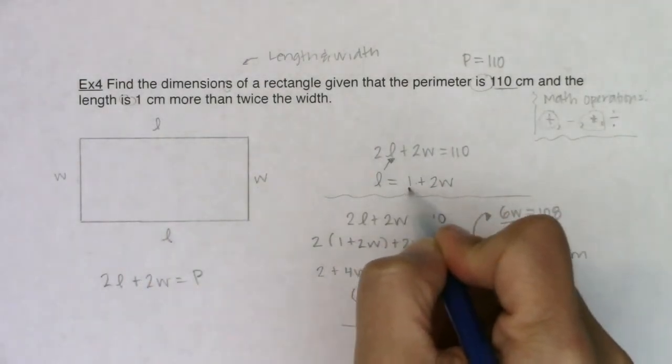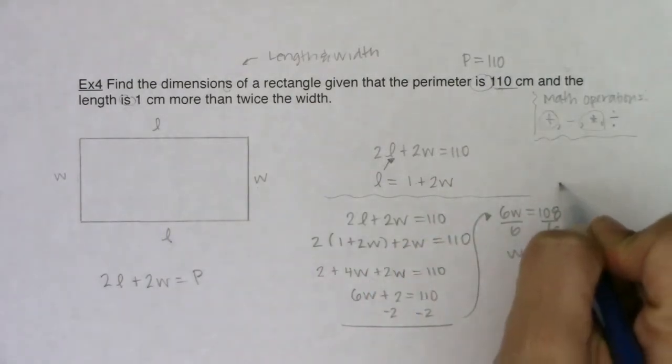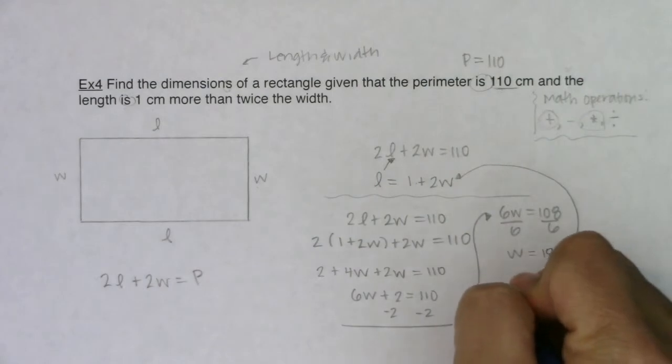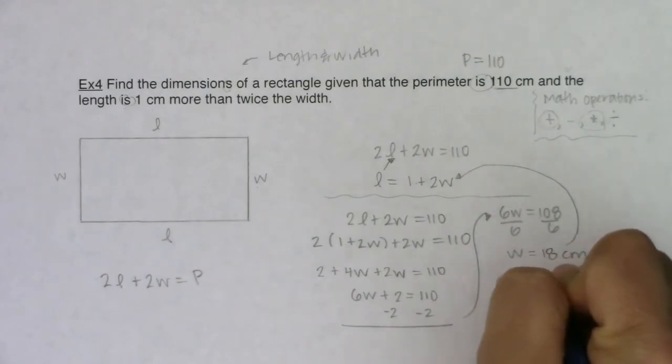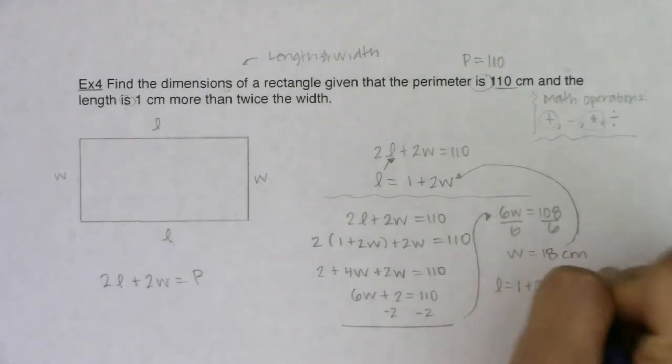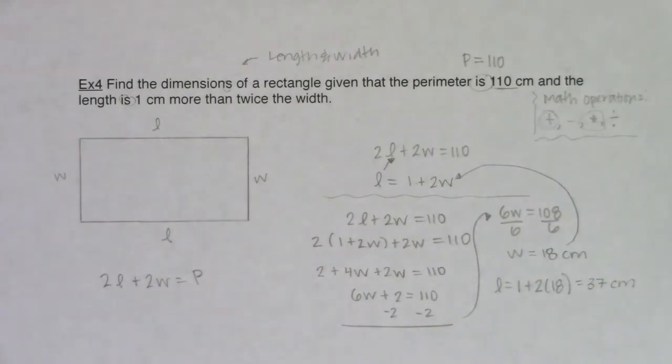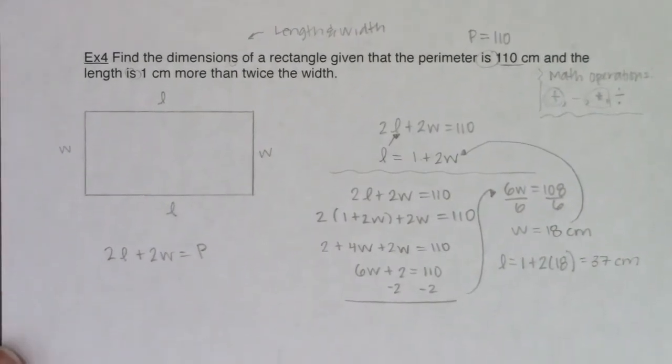So the length is right here. It's 1 plus 2W. So I'm going to sub this back into the length equation. So my length will be equal to 1 plus 2 times 18. Well, 2 times 18 is 36. 36 plus 1 is 37. And my units are centimeters. So I'm going to scooch this up and write that answer out.